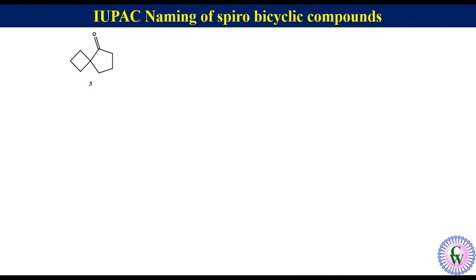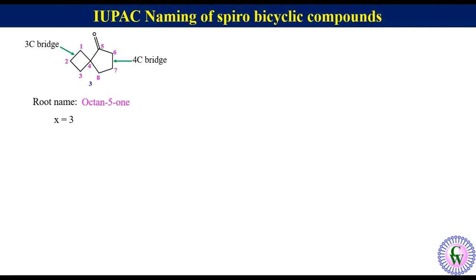Compound 3: it has a 4-membered and a 5-membered ring. The 5-membered ring has a keto group, but this does not affect the main rule of numbering — the smaller ring is still numbered first. So the numbering up to the spiroatom will be 1, 2, 3 and 4. Numbering of the 5-membered ring goes in the direction that gives the lower number to the ketonic carbon, so clockwise: 5, 6, 7 and 8. There is a 3-carbon bridge and a 4-carbon bridge, so x = 3 and y = 4.